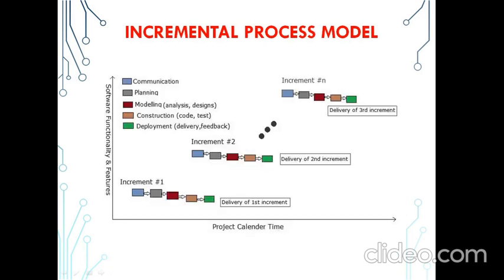This is the incremental process model. The increment model is the process of software development where the requirements are broken down into multiple standalone modules of the software development life cycle — that is, increment 1, 2, and so on.